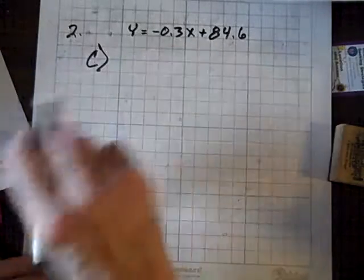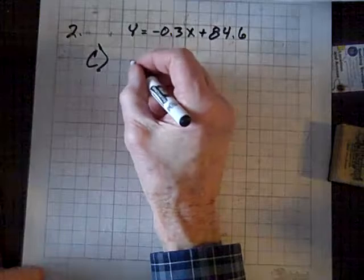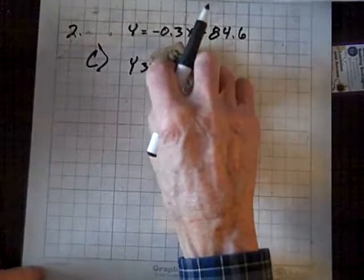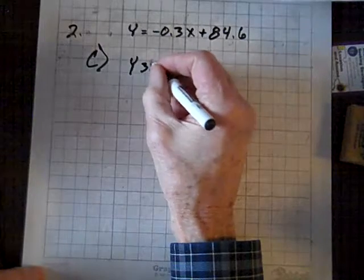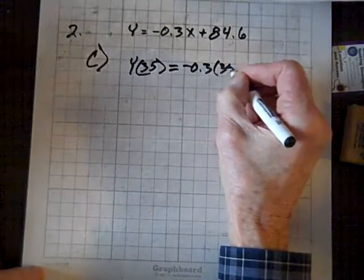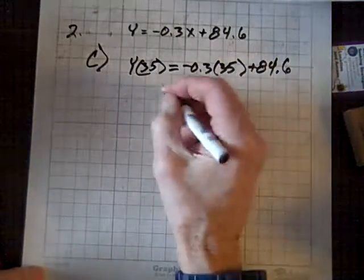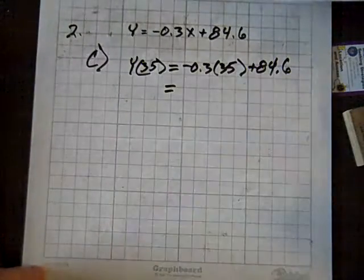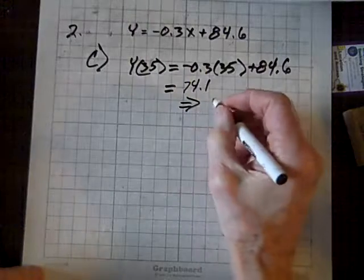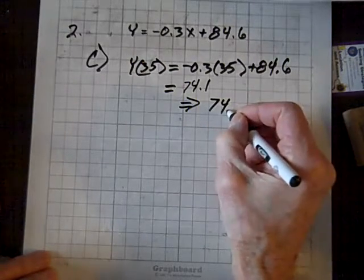Now, for C, it says, use the model to predict fossil fuel production in 2020. Well, there's 35 years from 1985 to 2020. So, we'll evaluate this for X equals 35, and so I get negative 0.3 times 35 plus 84.6. And when I compute that, I get 74.1.